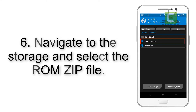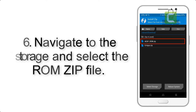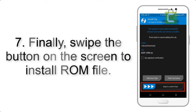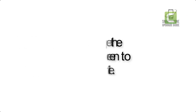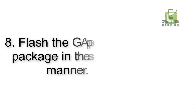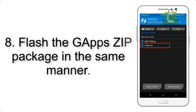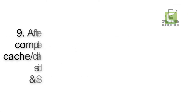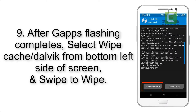Step 6: Navigate to the storage and select the ROM zip file. Step 7: Finally, swipe the button on the screen to install the ROM file. Step 8: Flash the GApps zip package in the same manner.